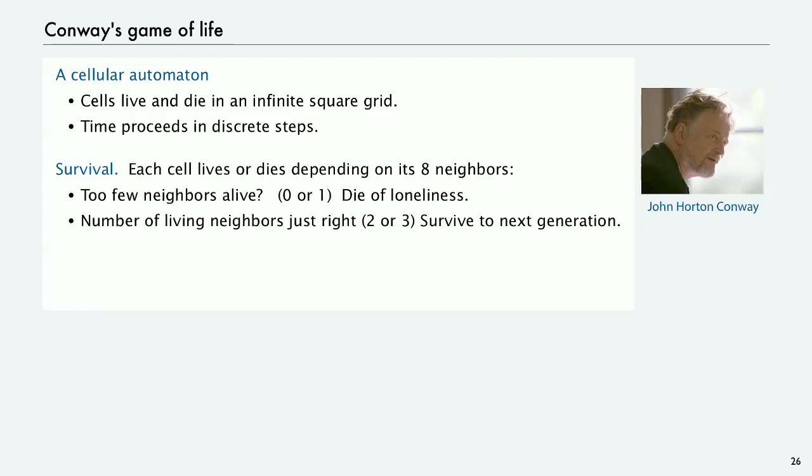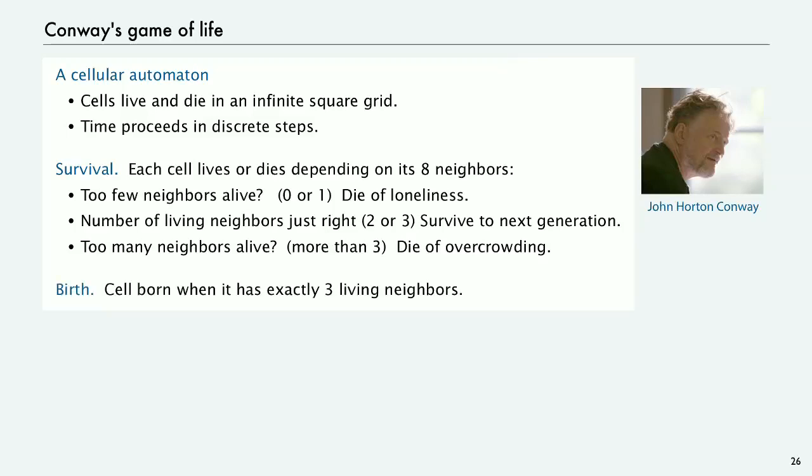If the number of living neighbors is just right, two or three, then it's going to live to the next generation. And if there's too many alive, more than three, it dies of overcrowding. And then the other rule is that a cell is born if it has exactly three living neighbors.